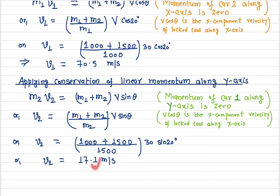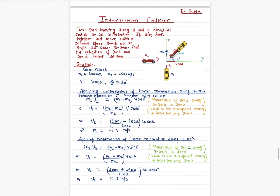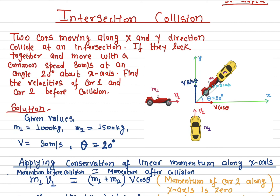Car two's speed of 17.1 m/s is significantly smaller than car one's speed of 70.5 m/s, so car one was definitely over-speeding. This is also how a police officer investigates an accident — they can determine which car was over-speeding from the post-collision information. If you have any questions or comments, please write below and don't forget to like, share, and subscribe.